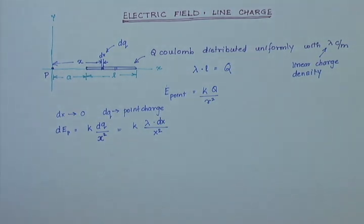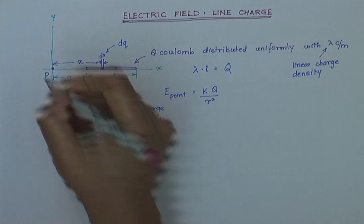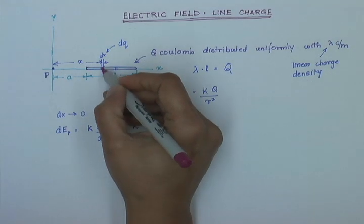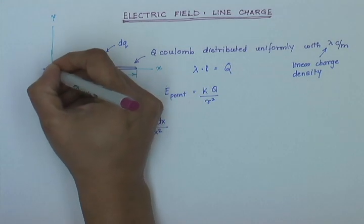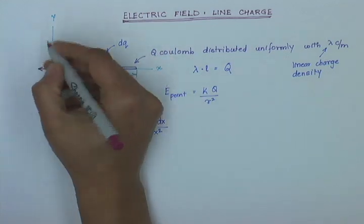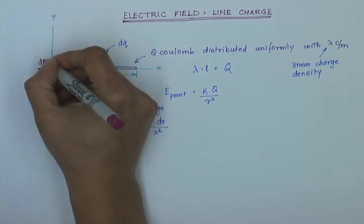And this is the electric field due to the small element I have selected at P. And its direction, since this is a positive charge, the electric field will act away from the charge. And this is the direction of dE.